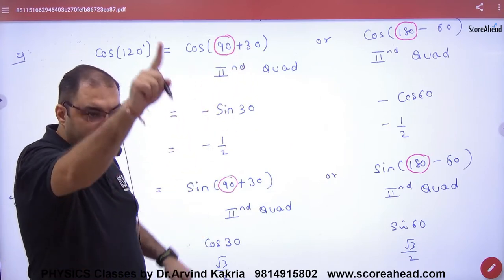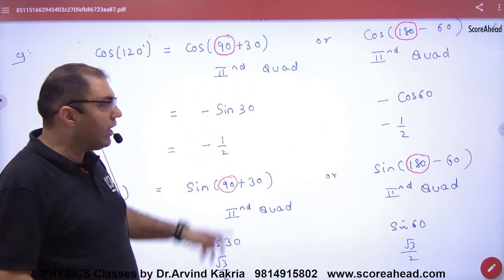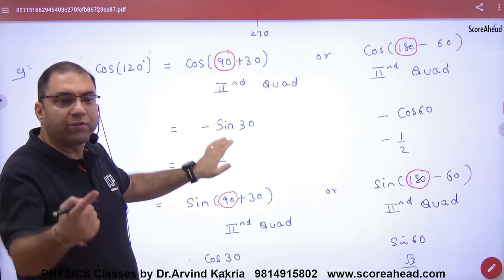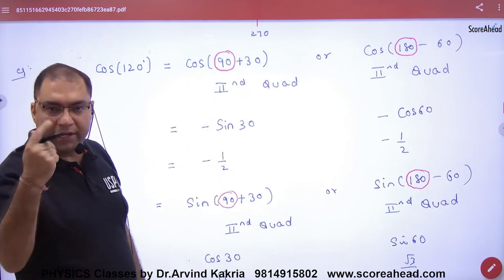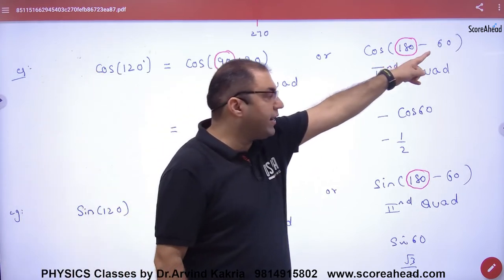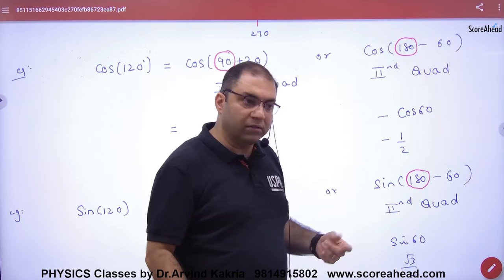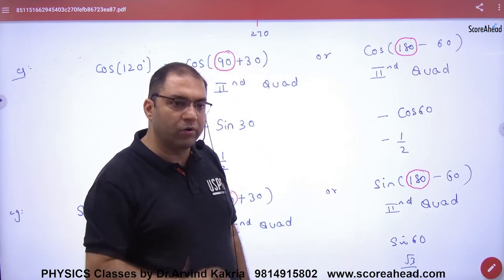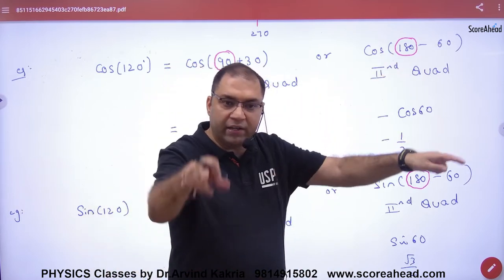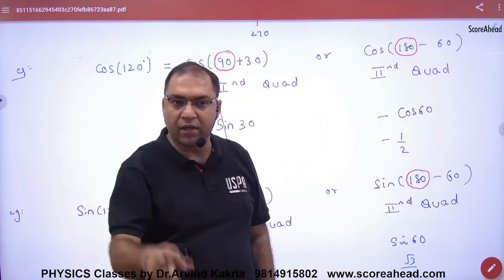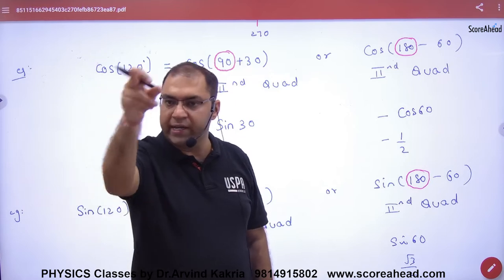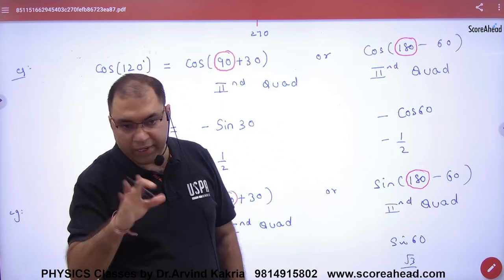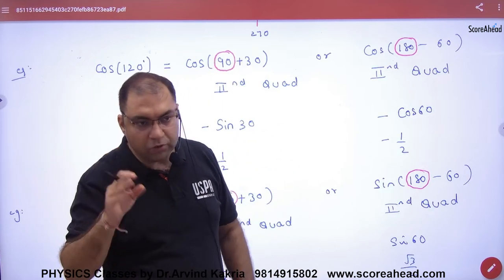So 90 is the standard angle. Some students say they prefer to write it as 180 minus 60. Yes, you can write it that way too. The standard angles are 0, 90, 180, 270, or 360 — you have to write the angle using one of these.